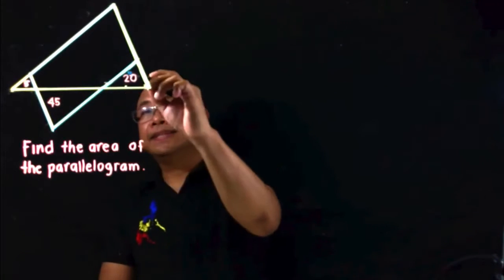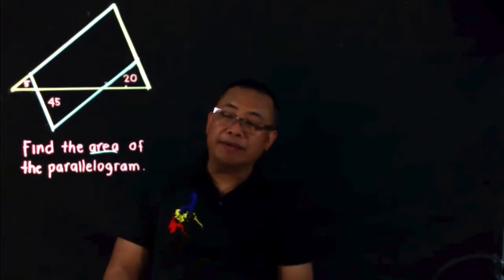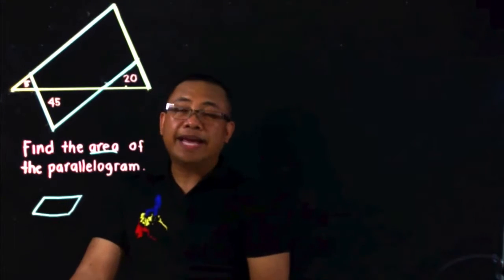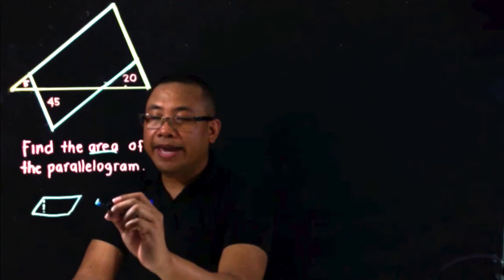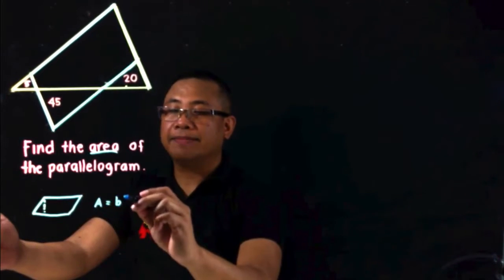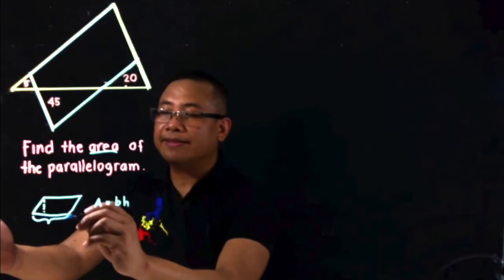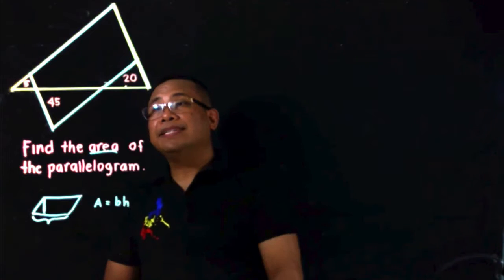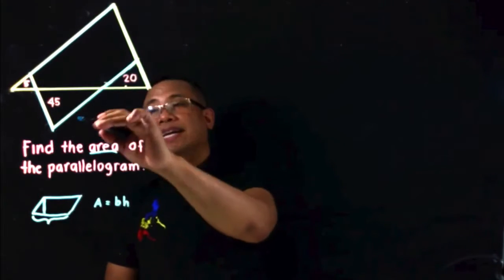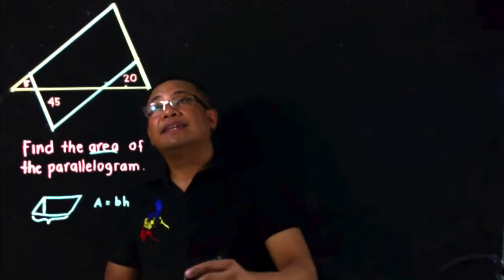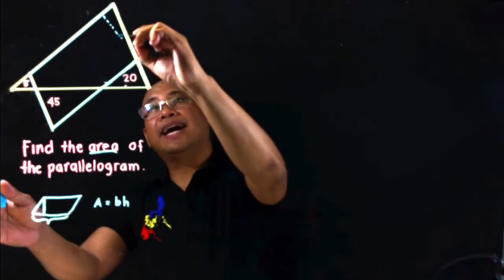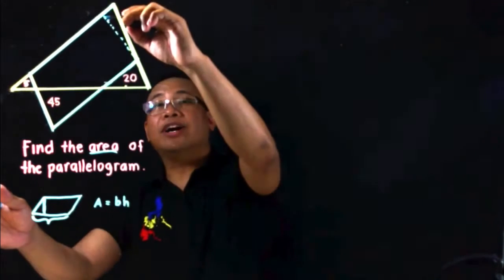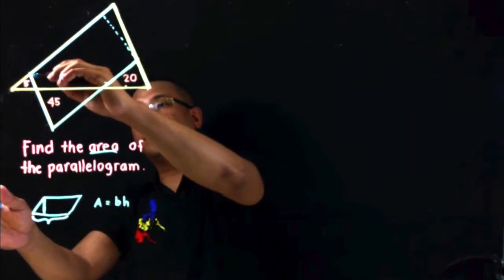So how do you find the area of a parallelogram? Let's recall that the area of a parallelogram is given by the formula: area equals base times height, where the base is the bottom length and the height is the perpendicular length. To use this formula, we need to find the length of the base and the height — a line segment from one vertex perpendicular to the opposite side.